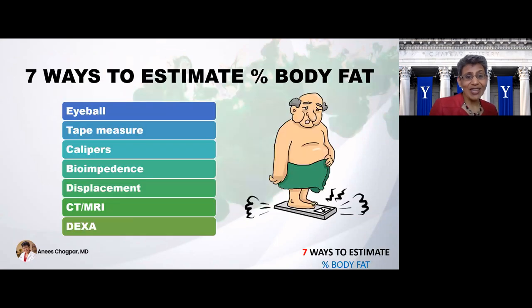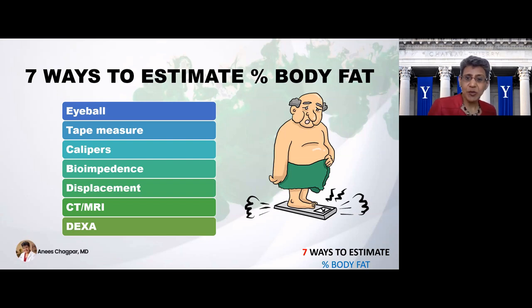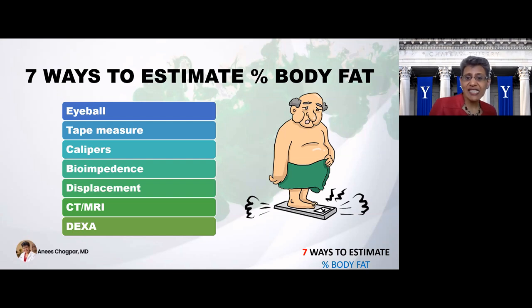So let's start with how do we estimate body fat? There are seven key ways to estimate the percentage of body fat that we have. The first is simply to eyeball it. Second is with a tape measure. Third is with calipers. The fourth is with bioimpedance. The fifth is displacement, and there are a couple of different ways of doing that. Sixth is using CT or MRI. And lastly, DEXA. These are in order of increasing complexity and increasing cost.